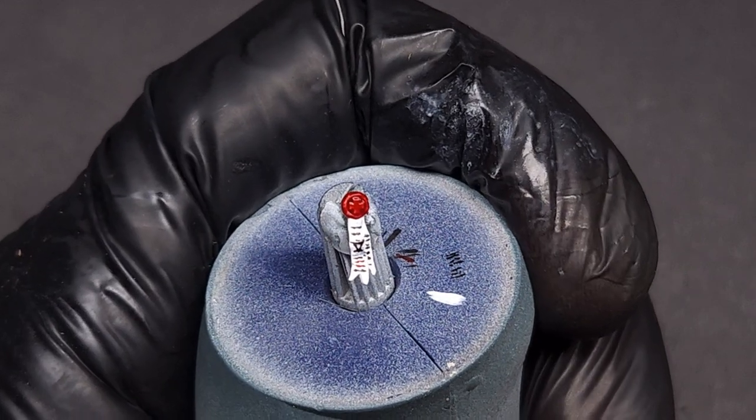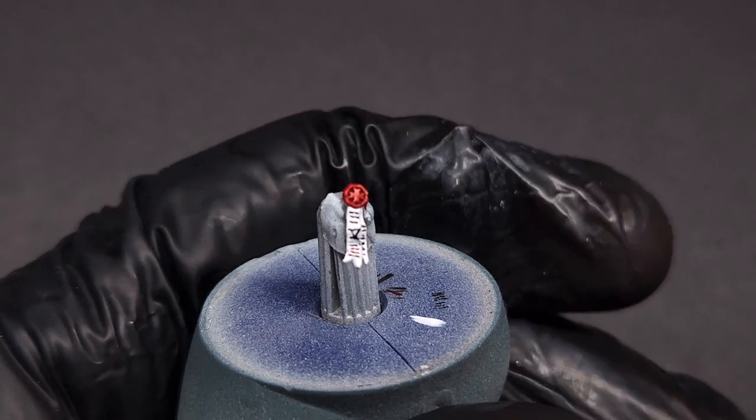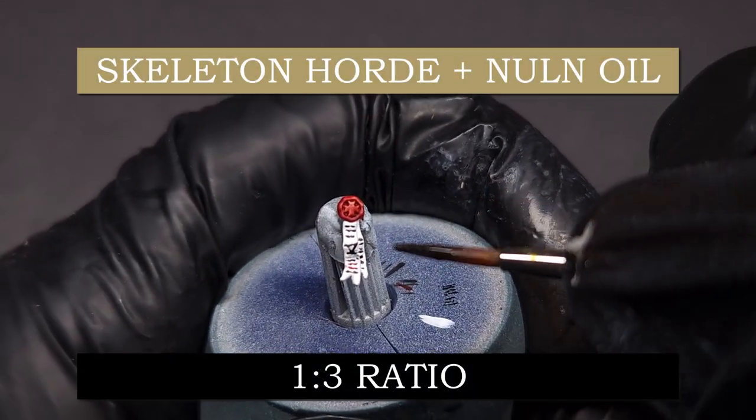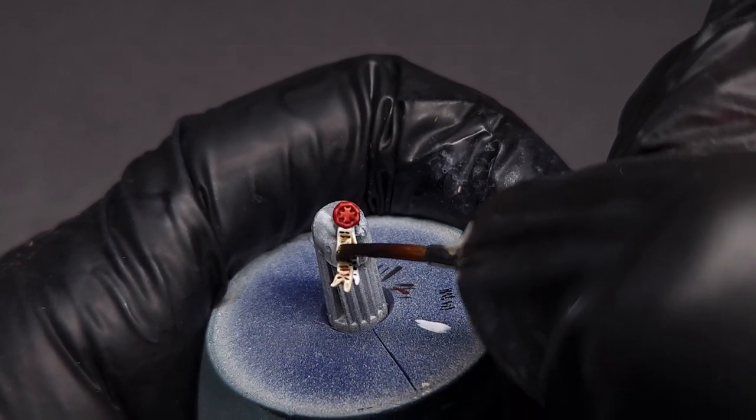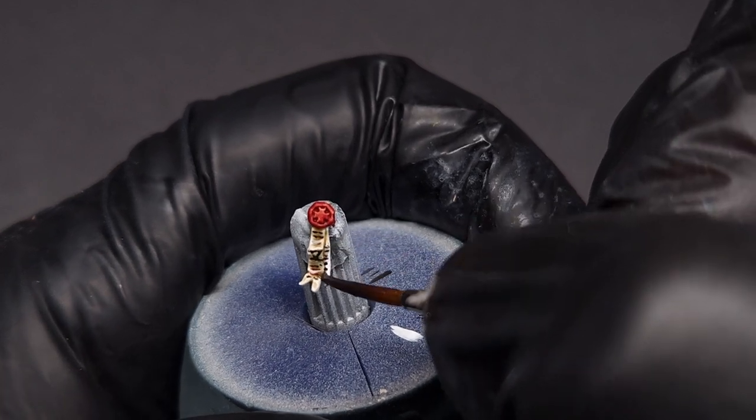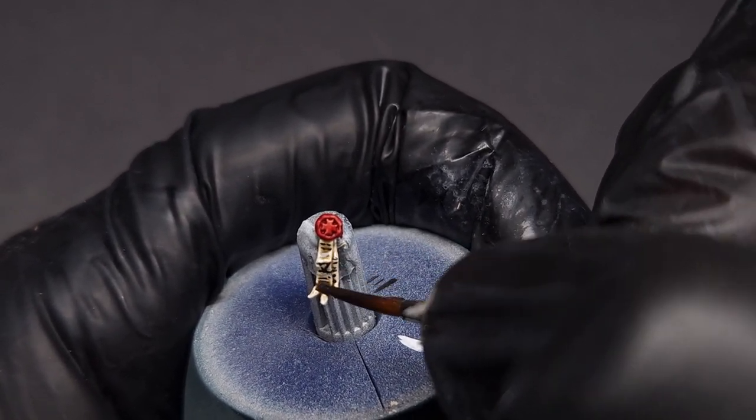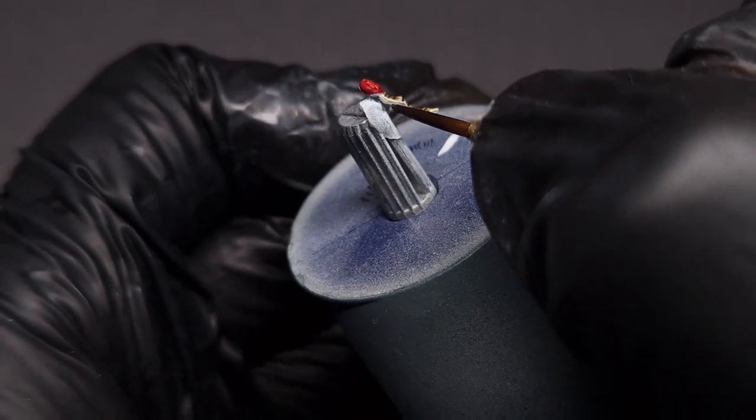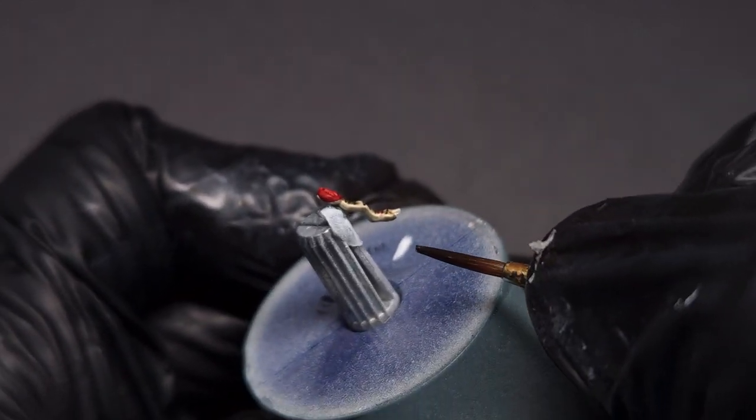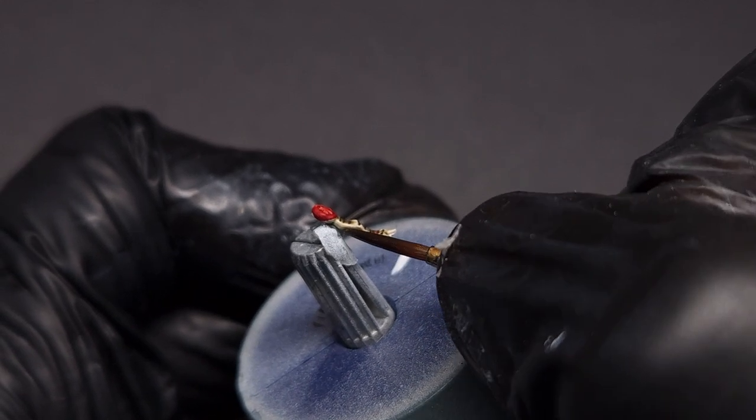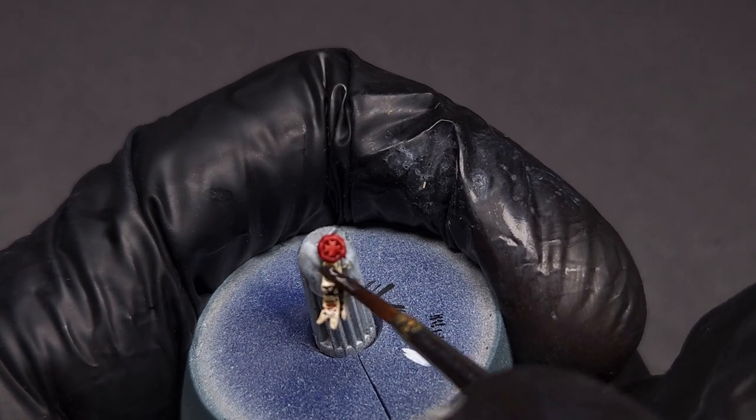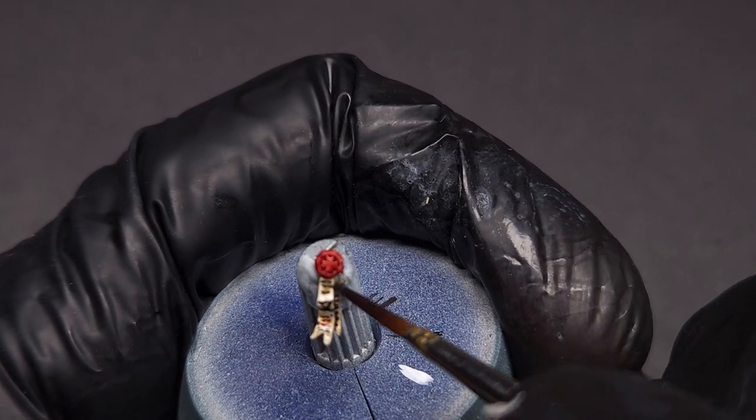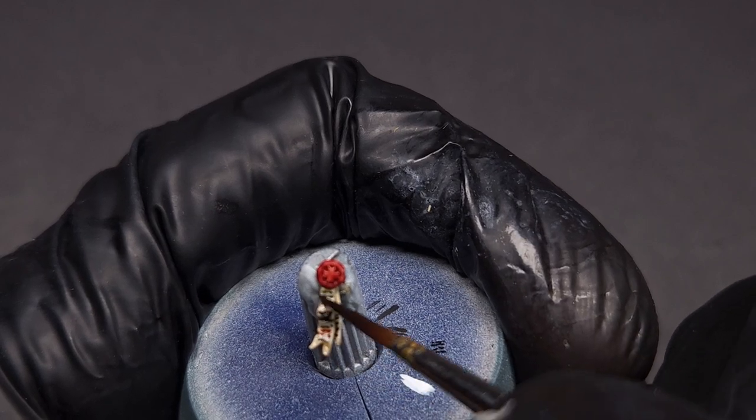All right, super easy final step. All you're going to do is mix Skeleton Horde contrast, one drop, with three drops of Nuln Oil. This will make a nice yellowed parchment color, and then you're just going to swipe that over the paper part. So the only thing to really pay attention to here is just how the shade pools in more crumpled parchment. Some of the Black Templars have very folded pieces, so just watch how the shade pools in the recesses. And if you notice that it's over-saturating an area, just take a damp brush and lightly pad out the excess shade.